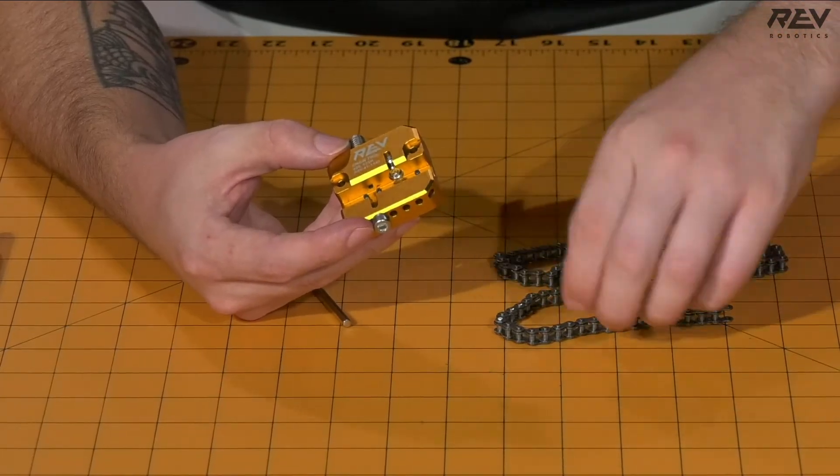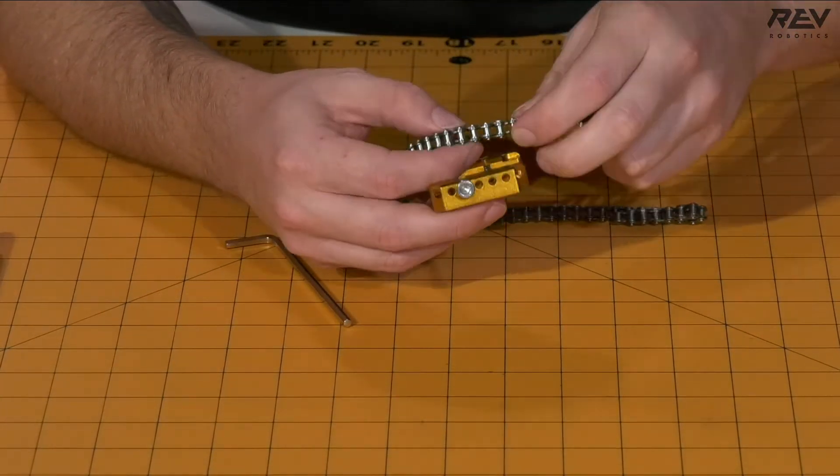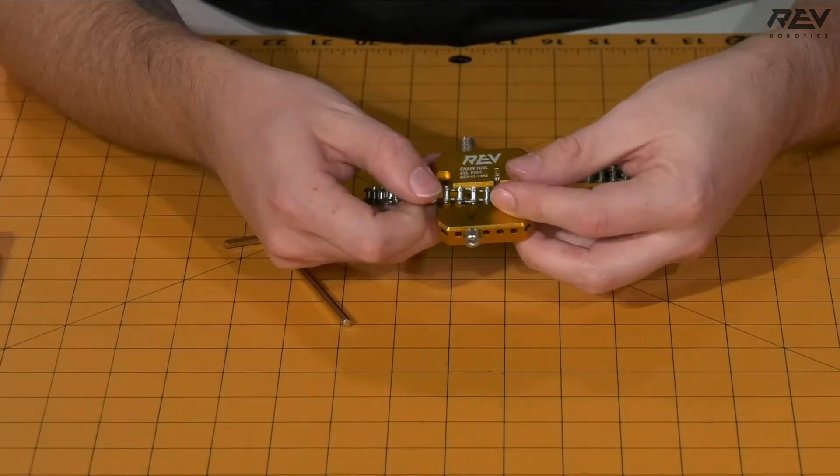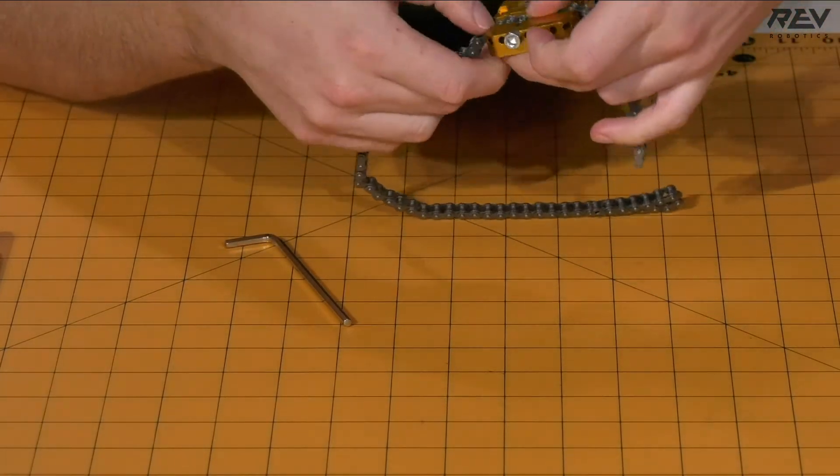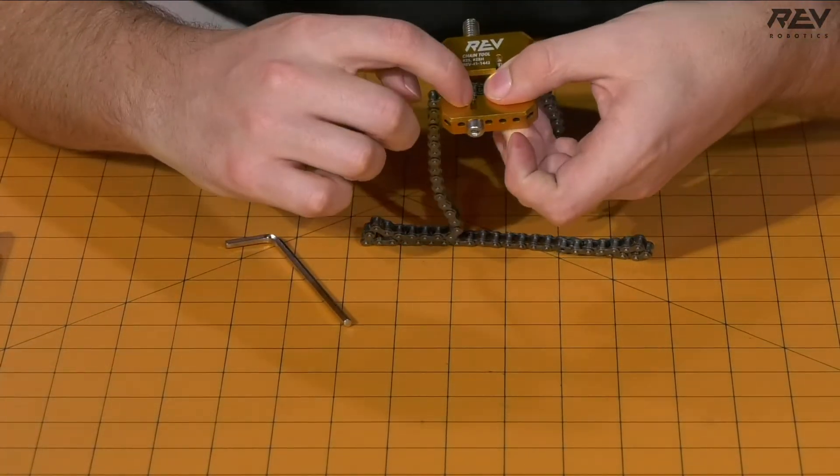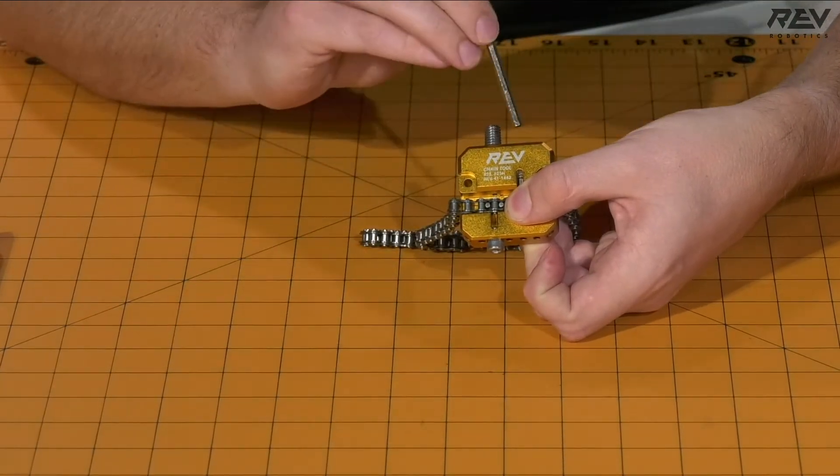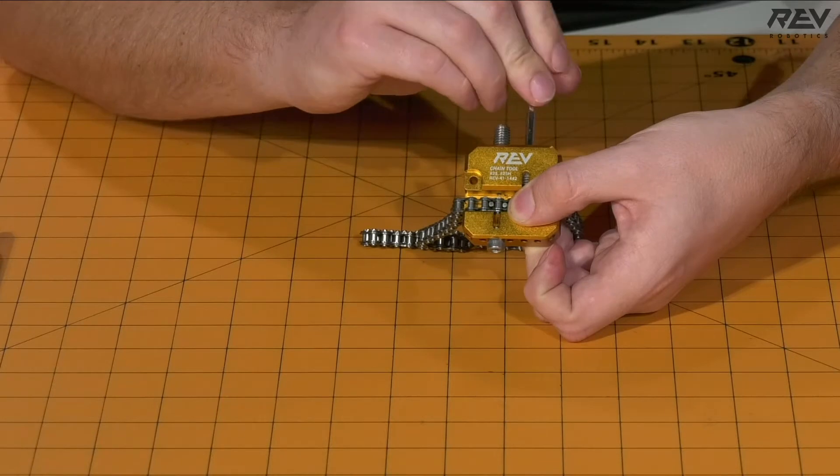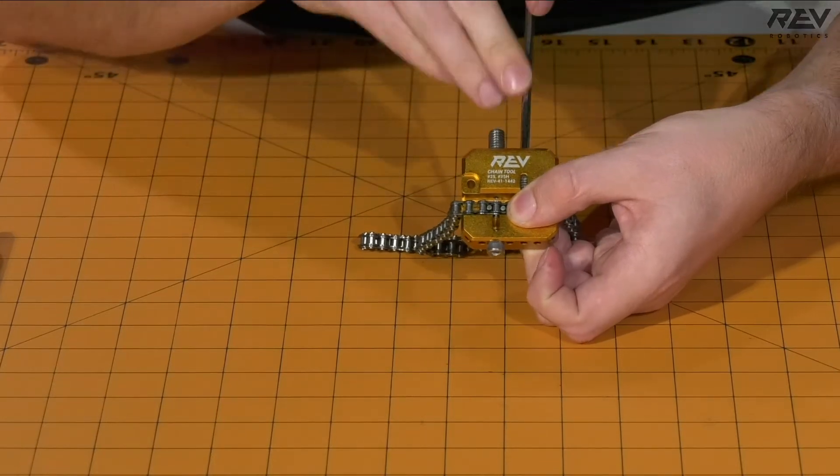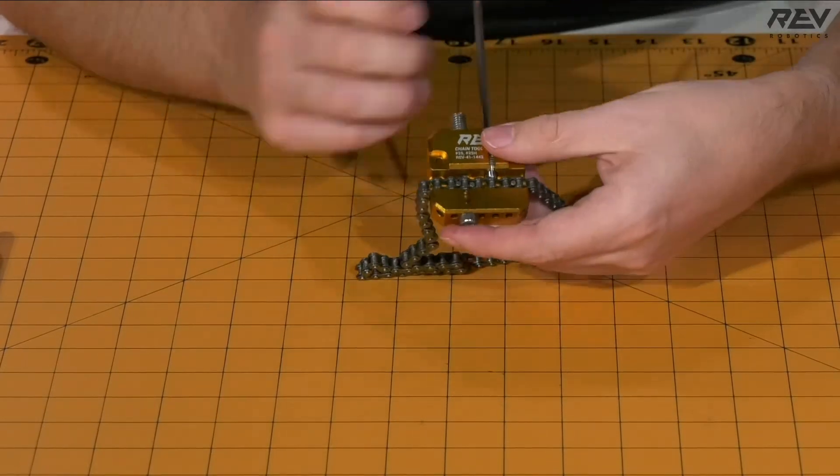We're going to find our pin that we wanted to break, and we're going to take that pin and align it up to the hole that is with our chain tool here. Once that's complete we're going to hold the chain in place, so we screw down this segment here to make that nice and snug.